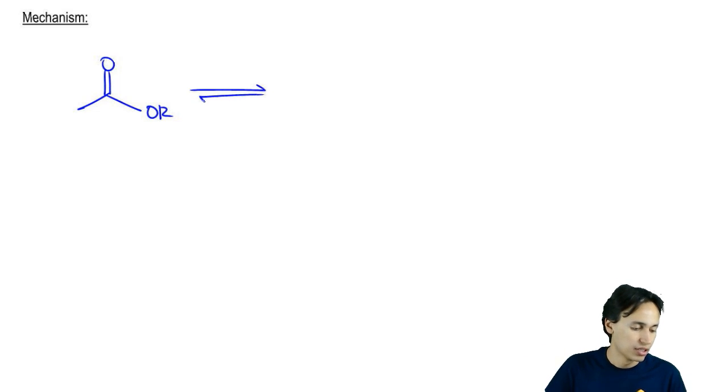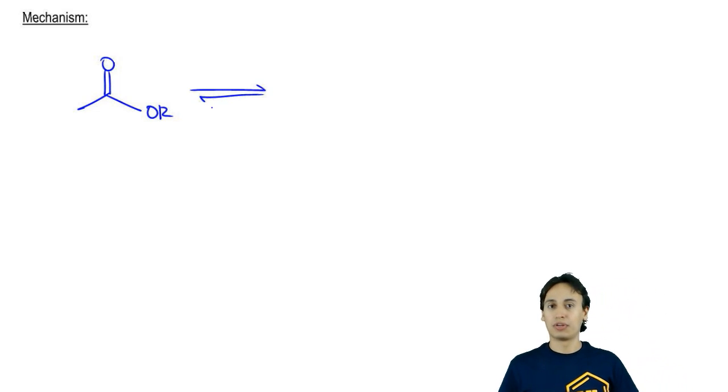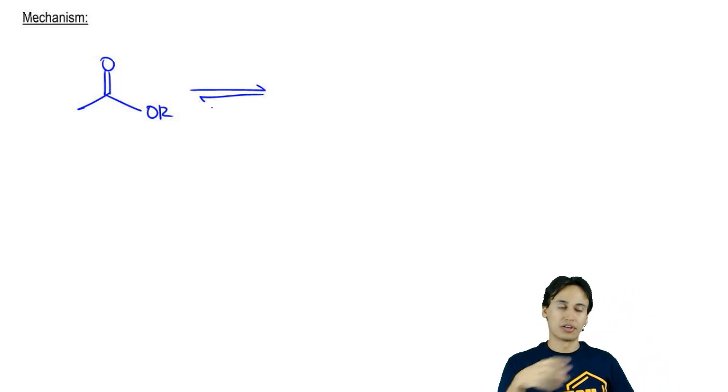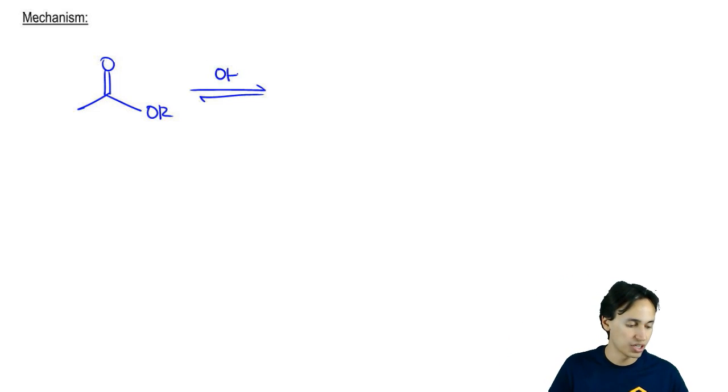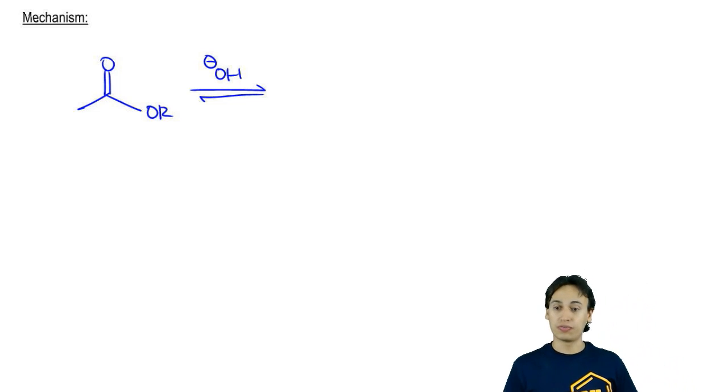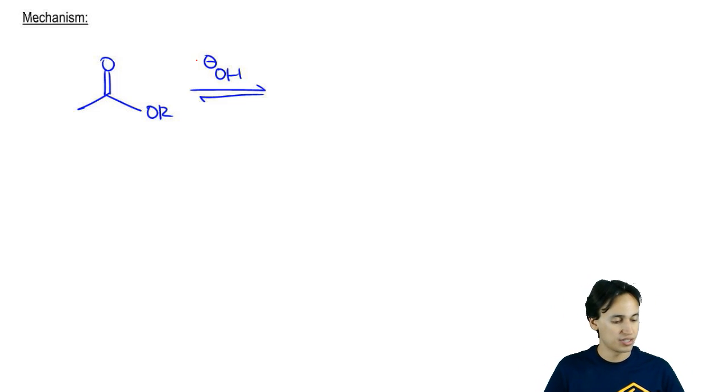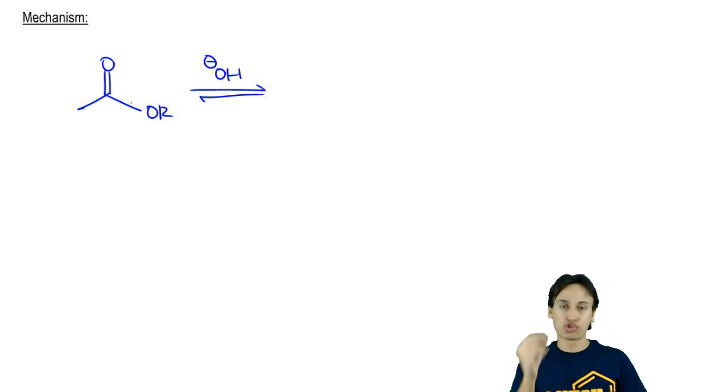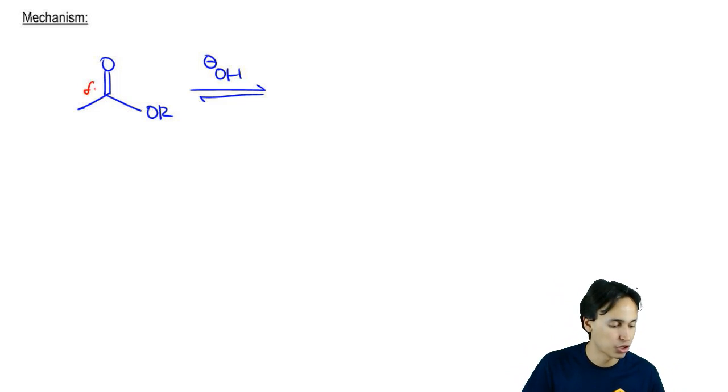Let's go ahead and assume that I'm going to be using water and base, so I'm just going to use O− as negative. That's my base. In my first step, I'm going to do a nucleophilic attack because this is already strong enough to attack that partial positive.